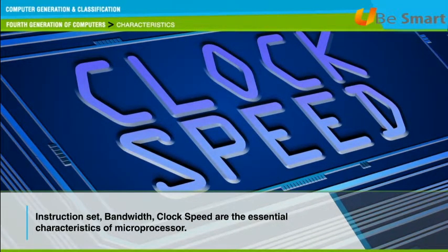Clock speed is the speed at which the instructions are processed per second by the processor. The unit of clock speed is megahertz, and the speed of the CPU is determined by the clock speed.